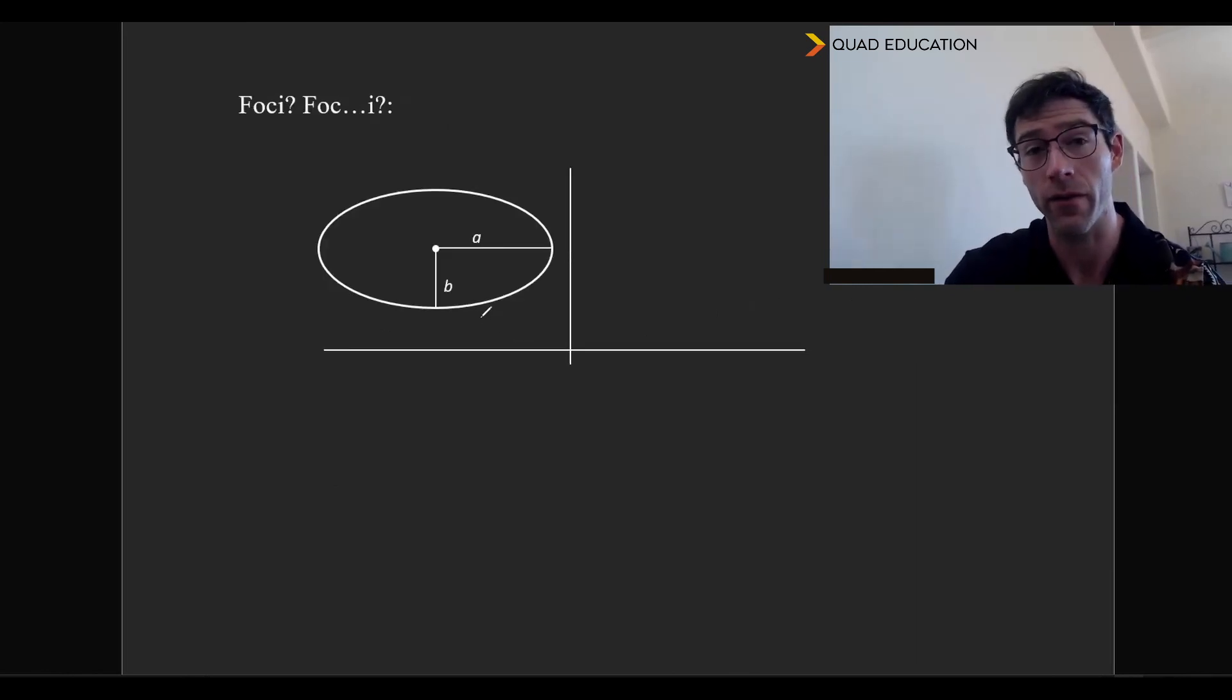So the next and final thing we have to talk about here is the foci of the ellipse. I'm never quite sure how to pronounce it. Is it either foci or foci? I'm going to say foci. So the foci of the ellipse is mathematically going to be c, is the foci. That's going to just be √(a² - b²).